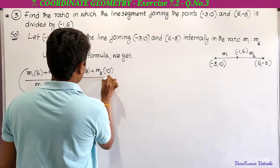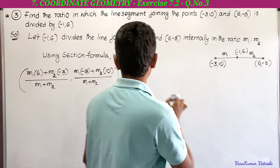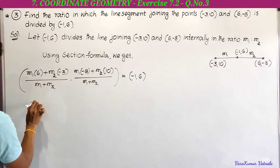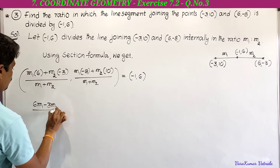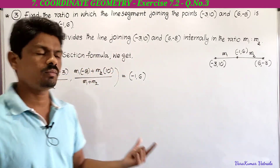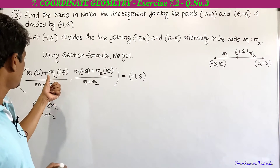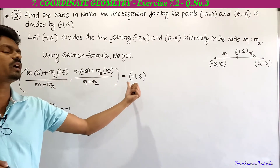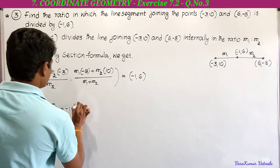Divided by m1 + m2 equals (-1, 6). So we get (6m1 - 3m2) / (m1 + m2). Now we just have to equalize either x-coordinates or y-coordinates to get the values of m1 and m2. Equalizing the x-coordinates: (6m1 - 3m2) / (m1 + m2) = -1.